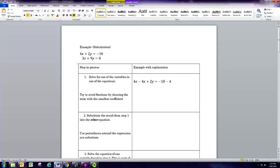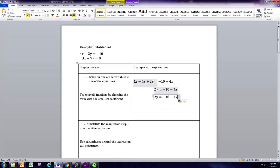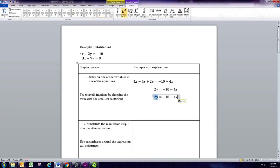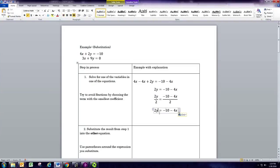Subtract 4x from both sides. Subtract 0 on the left. And now we need to divide both sides by 2.